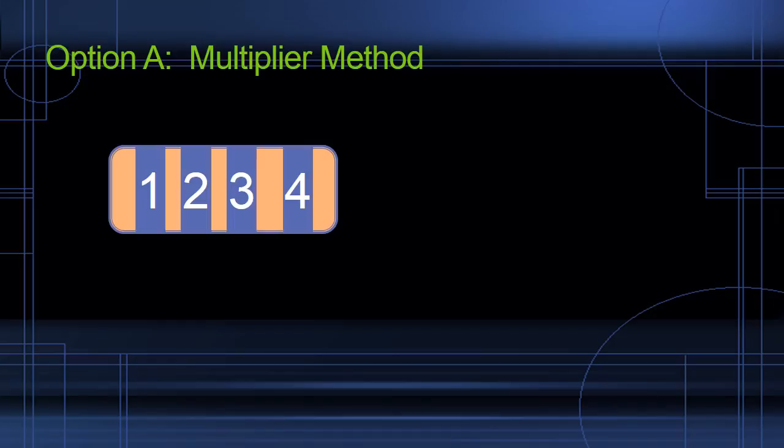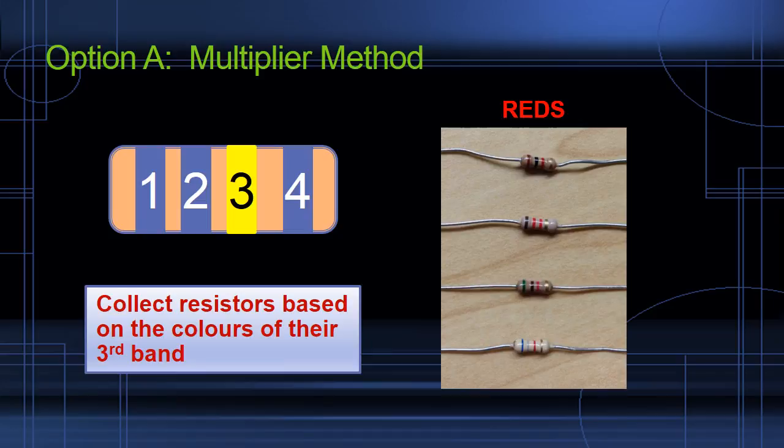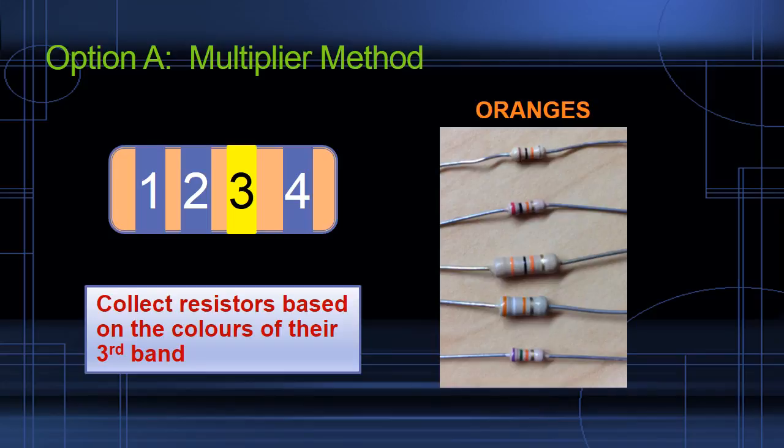If we choose option A, the multiplier method, we will collect resistors based on the colors of their third band. So we'll collect all the reds together and put them in a bin labelled 10 to the power of 2, collect all the oranges together in a bin labelled 10 to the power of 3, and so on.